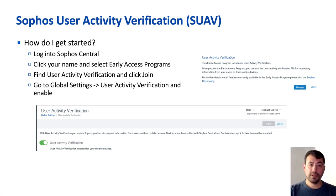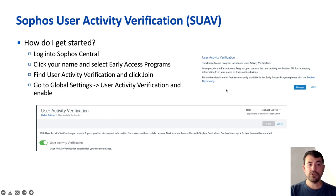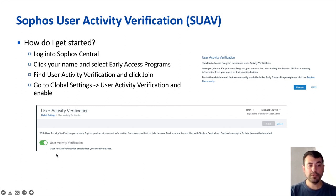To get started, log into SoPos Central, click your name in the upper right, and click Early Access Programs. In there, you'll see a new Early Access Program called User Activity Verification — you'll want to join that. Once you've joined the EAP, go to Global Settings, find User Activity Verification, and simply enable the slider.